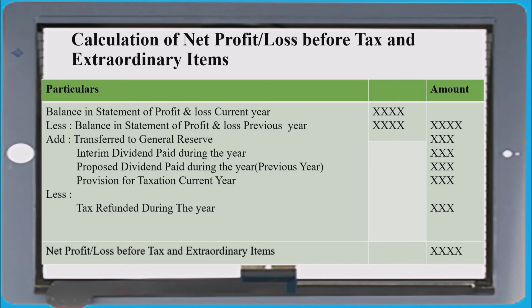Remember how to prepare the fixed asset account or provision for tax account. Fixed asset account: write opening balance on the debit side and closing balance on the credit side. Any sale of asset goes by bank; any depreciation goes by depreciation account; any loss on sale goes by loss on sale account. In case of profit, it comes on the debit side. The balance to bank is treated as purchase of asset; by bank is treated as sale of asset. For provision for taxation: opening balance on the credit side, closing balance on the debit side; income tax paid during the year is debited to bank; income tax provided is credited. Also prepare the accumulated depreciation account.